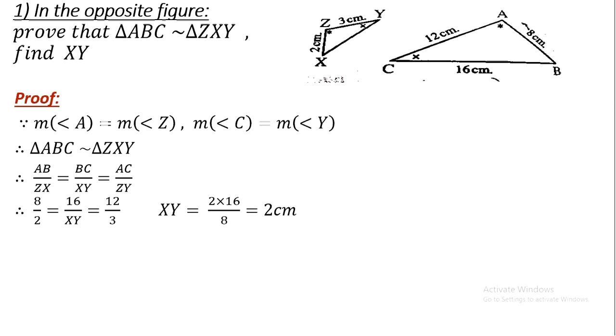To find XY: 2 times 16 divided by 8 gives a result of 2 centimeters — wait, XY equals 2 times 16 divided by 8, which equals 4 centimeters.